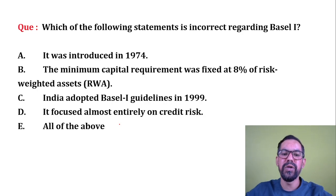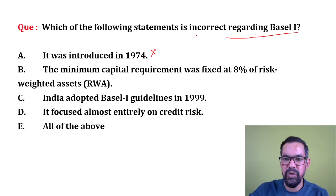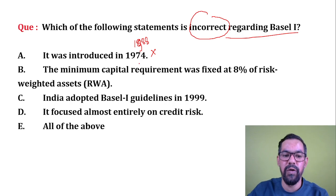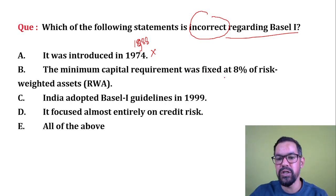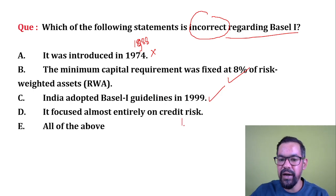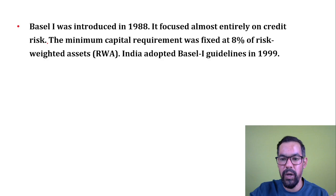Next question: which of the following statements is incorrect regarding Basel 1? Statement: it was introduced in 1974 — this is incorrect. It was introduced in 1988; it was in 1974 that BCBS was formed. The minimum capital was fixed at 8% — correct. India adopted Basel 1 in 1999 — correct. It focused on credit risk — correct. So option A is the right answer, as it is the incorrect statement about Basel 1.